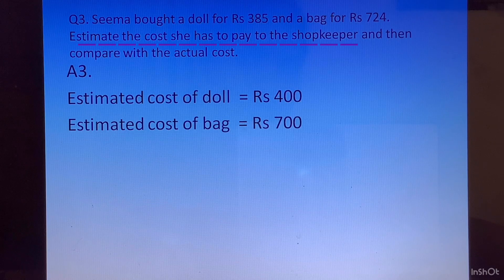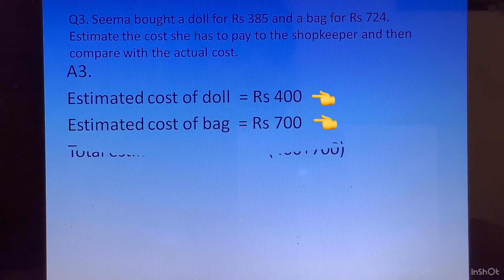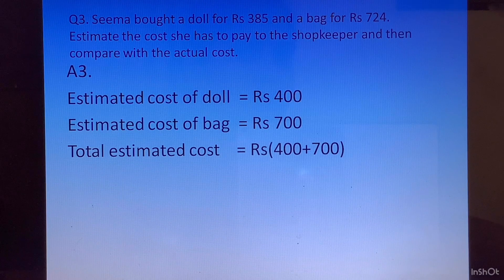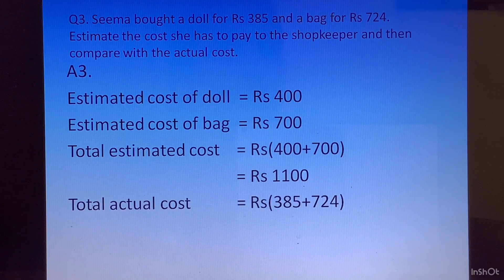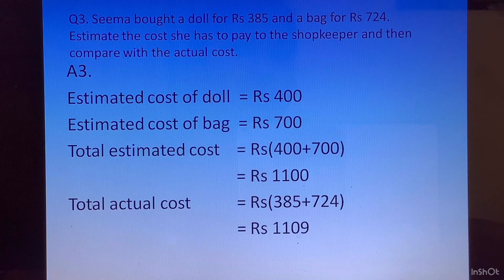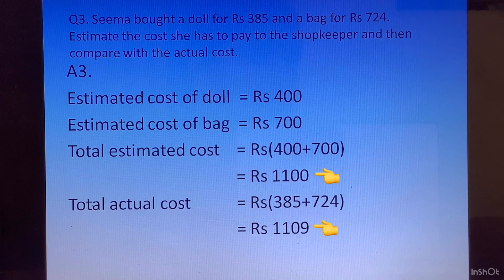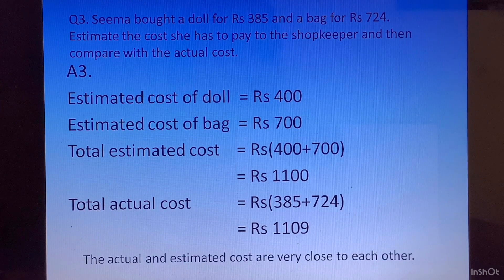To find the estimated total cost, we add the two rounded values: Rs. 400 plus Rs. 700 equals Rs. 1100. To compare with the actual cost, we add 385 plus 724, giving us the actual total. There is hardly any difference — the difference is only Rs. 9. So the actual and the estimated cost are very close to each other.